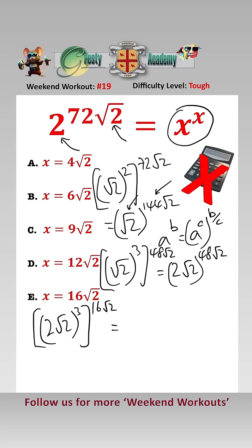2 root 2 cubed is equal to 2 cubed times root 2 cubed to the 16 root 2, which equals 8 times 2 times root 2 to the 16 root 2.